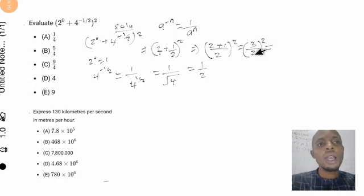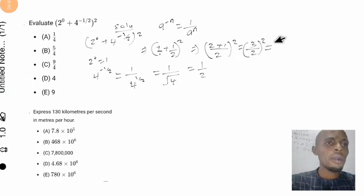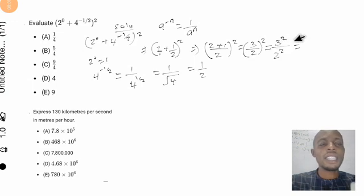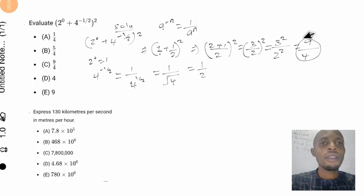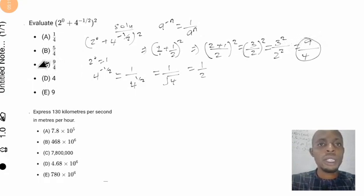So we have three-halves raised to the power of two. This equals 3 squared over 2 squared, which is 9 over 4. Our answer to this question is 9 over 4. Looking at the options, we can see that is option C, so C is the answer to this question.